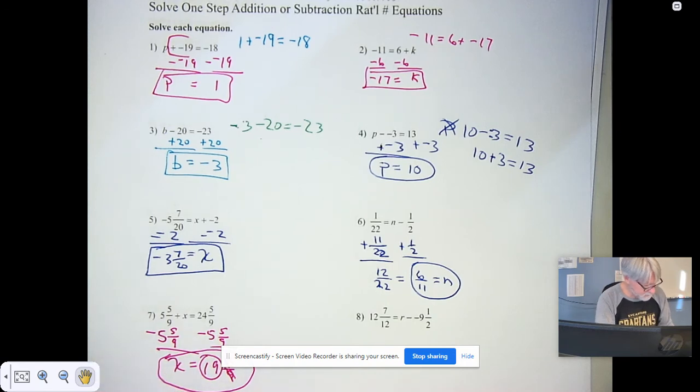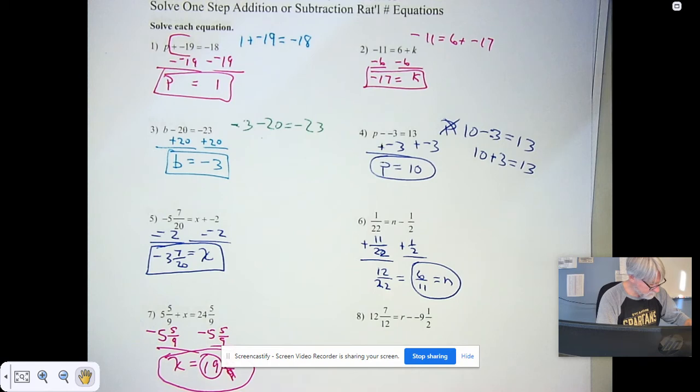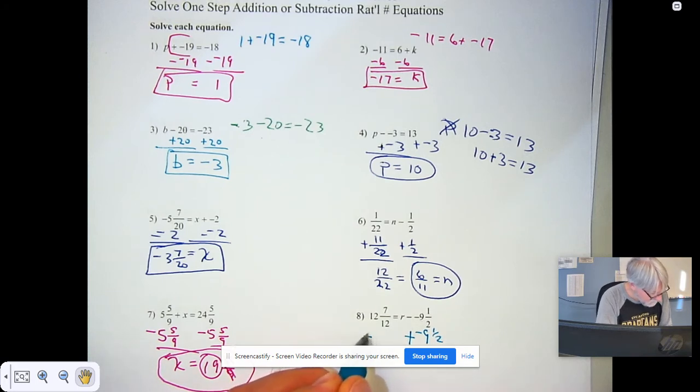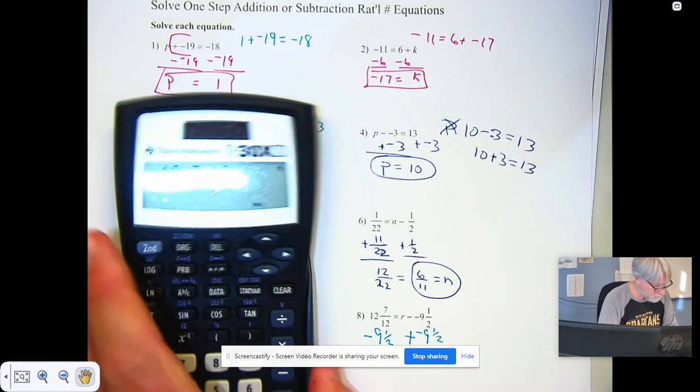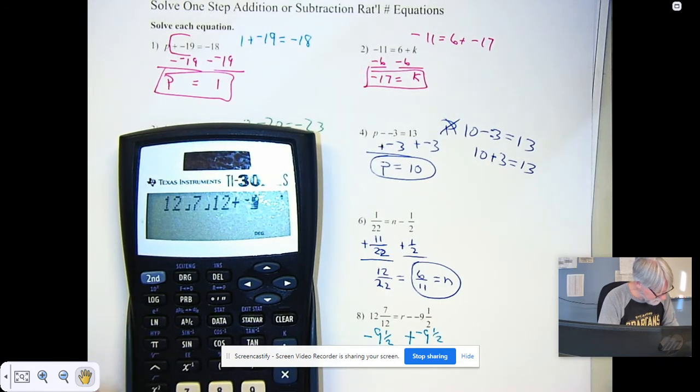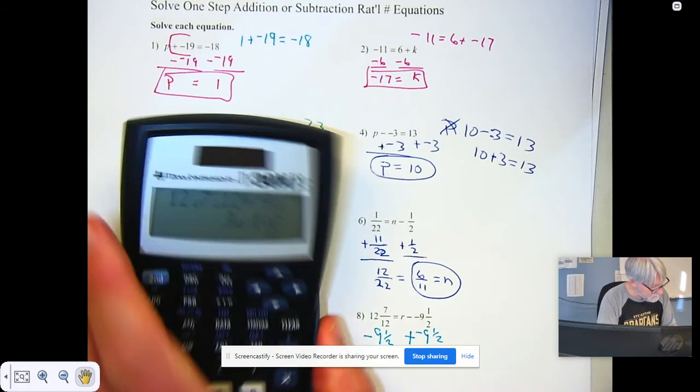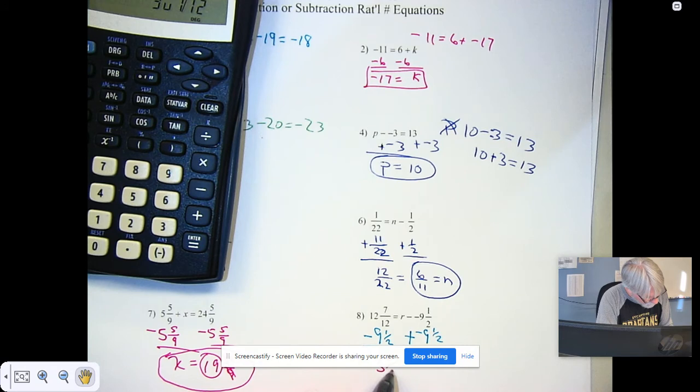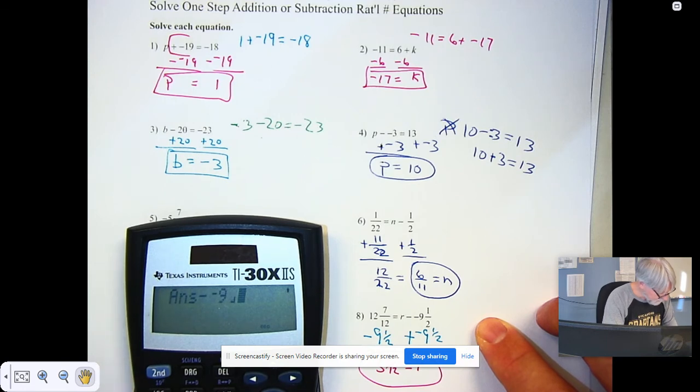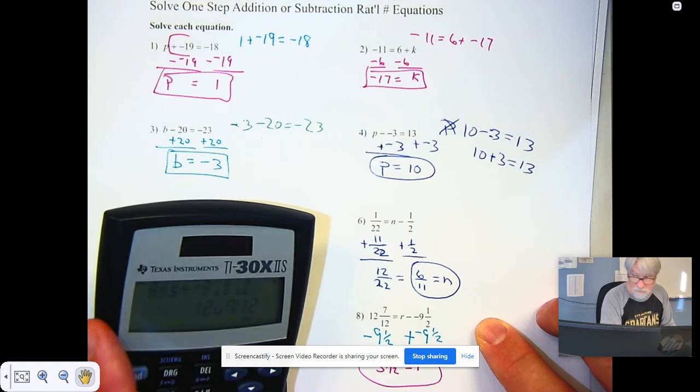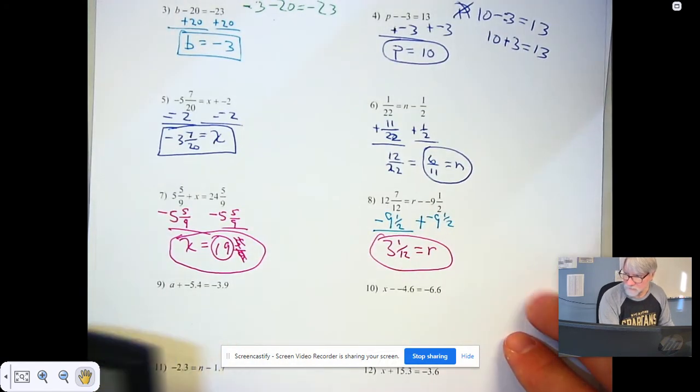Just 19, because if I add 5 and 5/9, I would have got 10/9. I wouldn't have checked. Subtracting a negative, add a negative. If I add negative 9 and a half to 12 and 7/12, plus a negative to 12 and 7/12, that's 3 and 1/12. That's my value for R, 3 and 1/12. 3 and 1/12 minus a negative 9 and 1/2 equals 12 and 7/12, exactly like I need it to be.